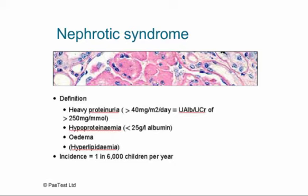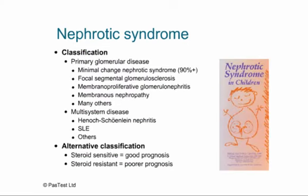Classification of nephrotic syndrome: primary glomerular disease versus multi-system disease. Under primary glomerular disease, the vast majority of children have minimal change disease; few have FSGS, MPGN, or membranous nephropathy. Multi-system disease includes HSP and lupus among many others. An alternative, more practical classification is steroid-sensitive versus steroid-resistant disease — irrespective of underlying histology, steroid sensitivity predicts good prognosis and steroid resistance predicts poorer prognosis.